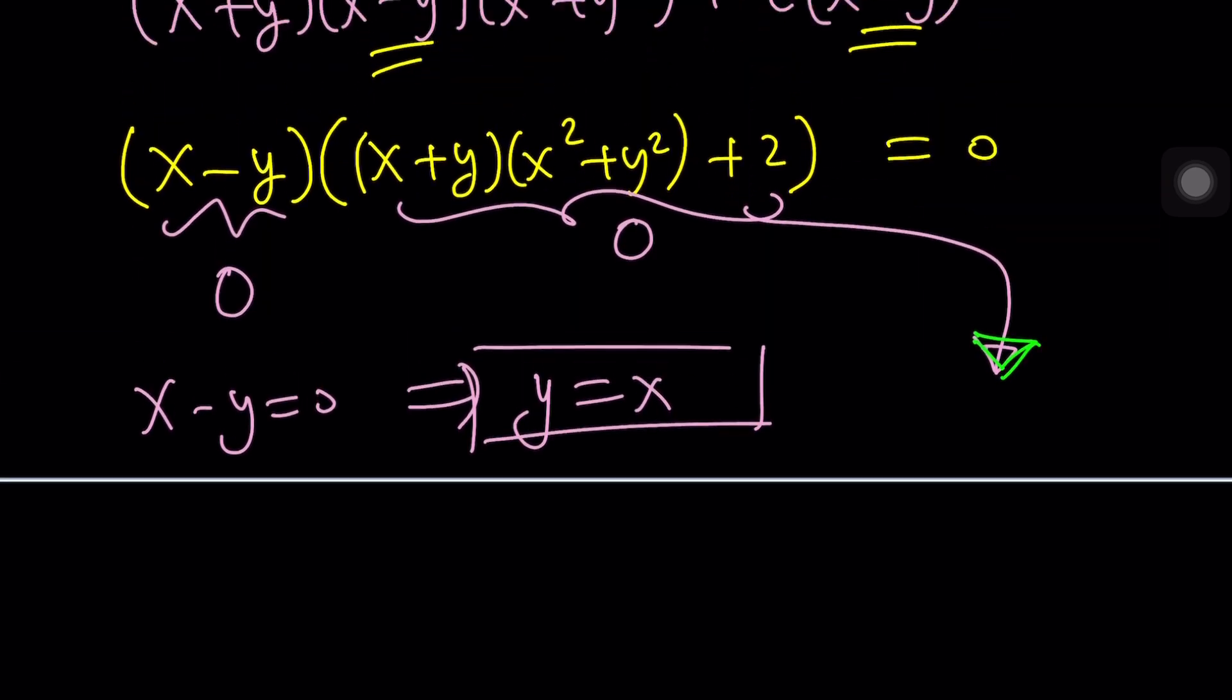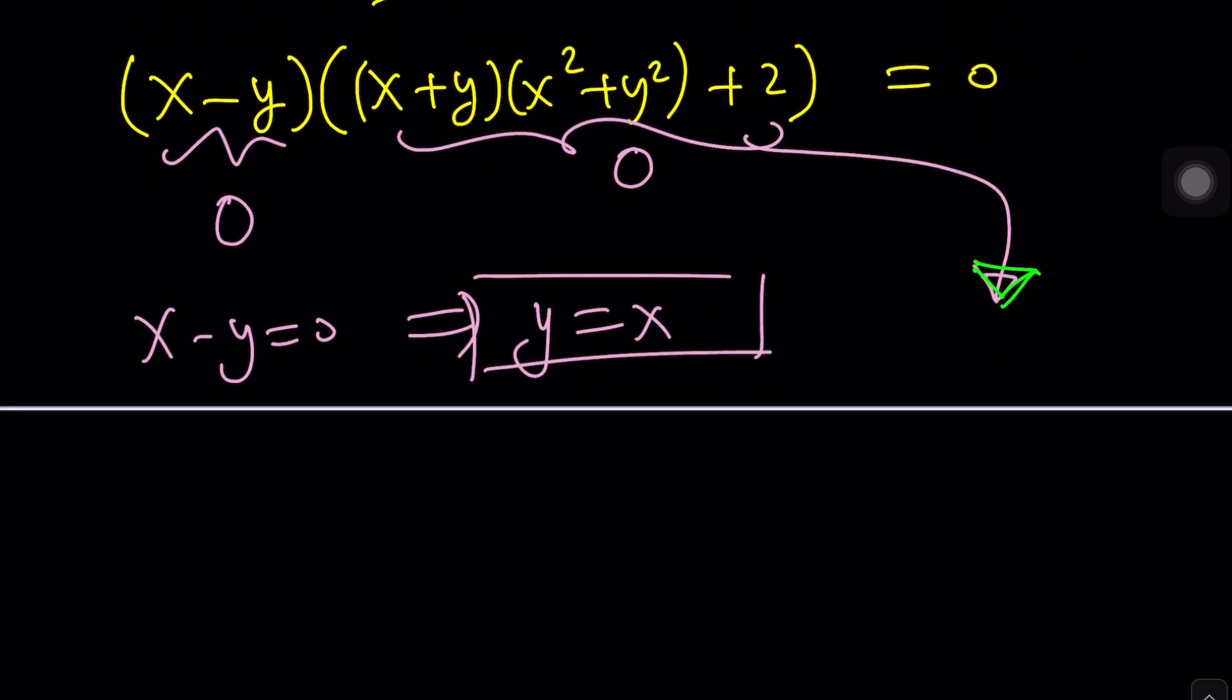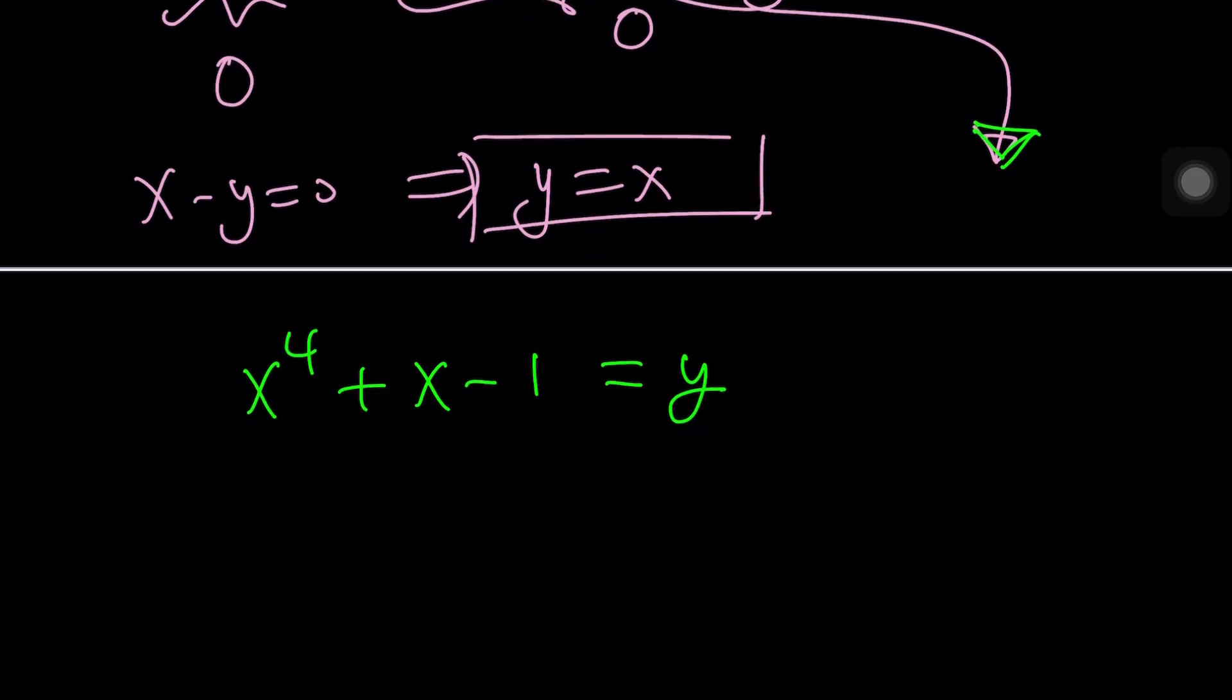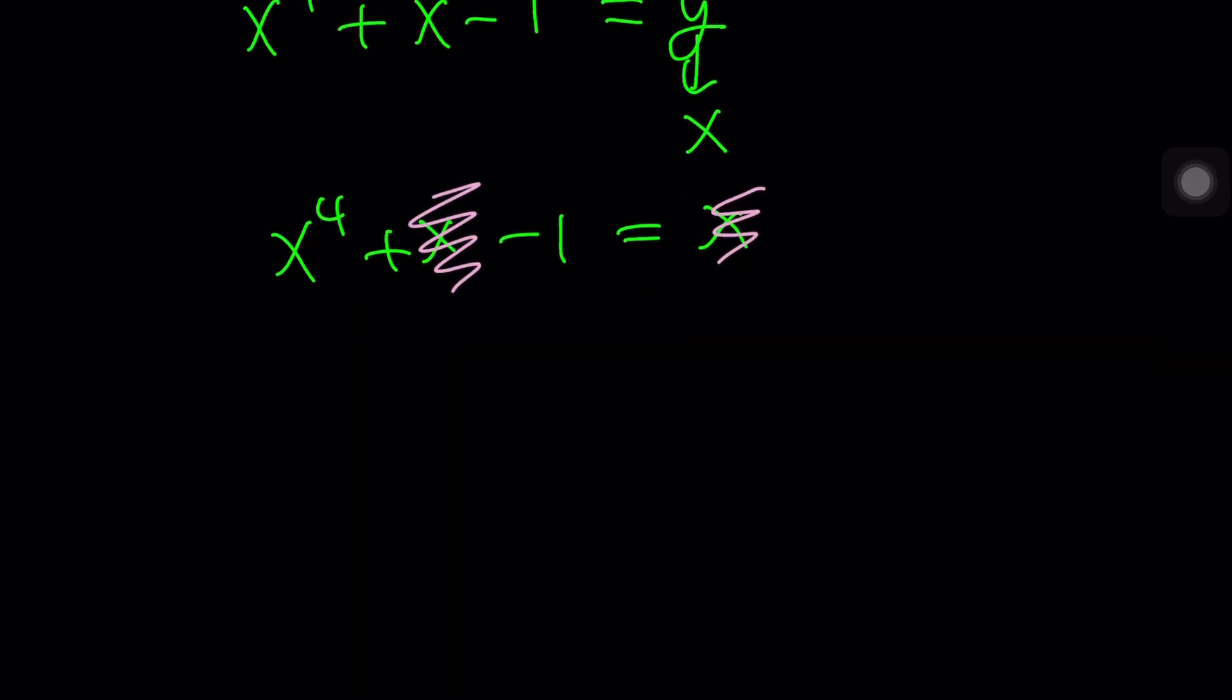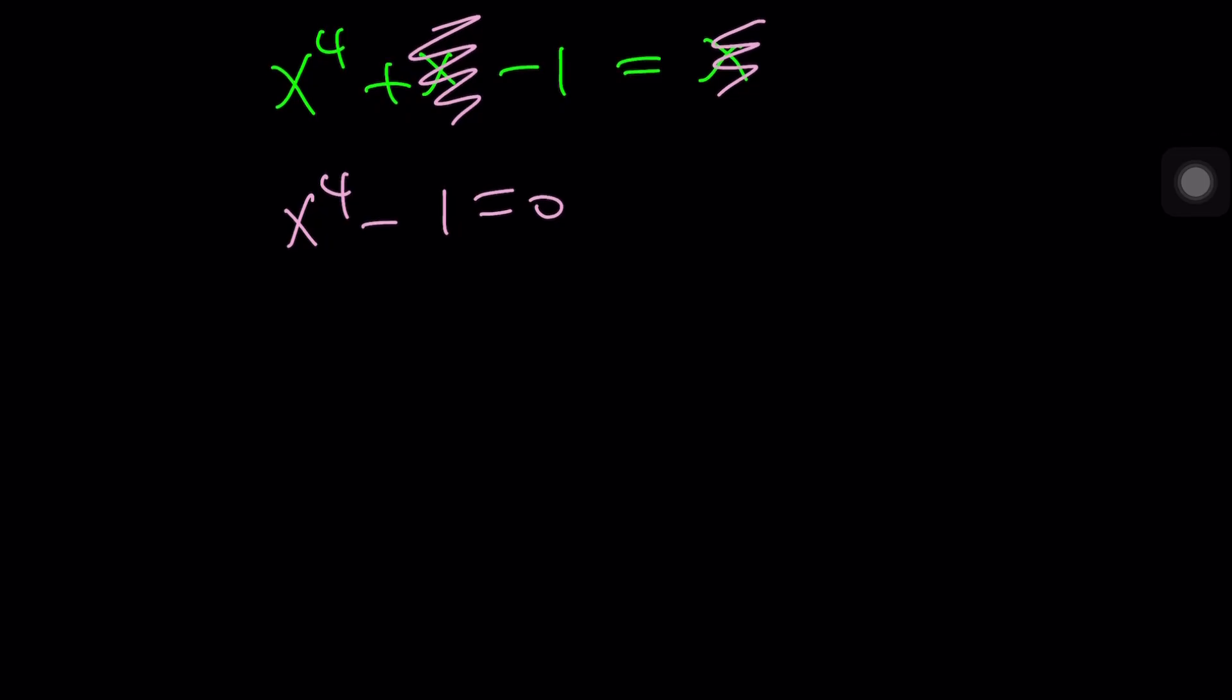Now, y equals x is going to give us what? Let's go back. What is y? This is y. This is why we did this. So now replace y with x. x to the fourth plus x minus one equals x. And then x cancels out. Ta-da! You end up with x to the fourth minus one equals zero. You can set x to the fourth equals one, but that's going to give you the real solutions only. Let's go ahead and take it to another level.